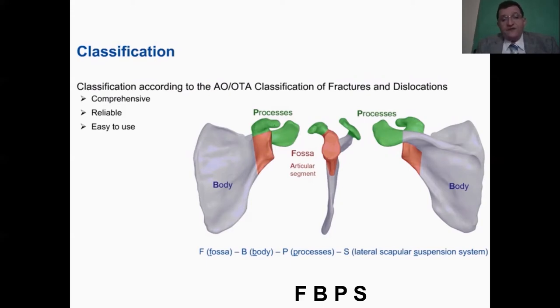They have divided the scapula into four bits, the fossa, F, which is the articular segment, the body B, which represents the main part of the scapula, minus the processes, which is the acromion and the coracoid process, while the S stands for the lateral scapular suspension system, FBPS.